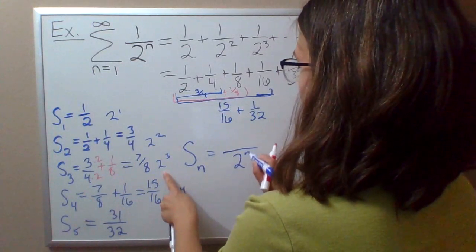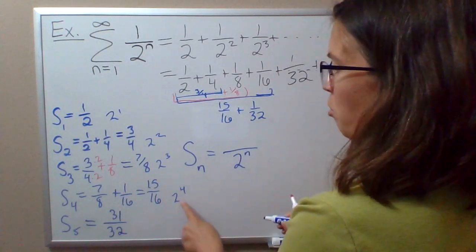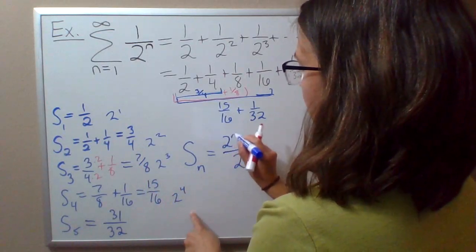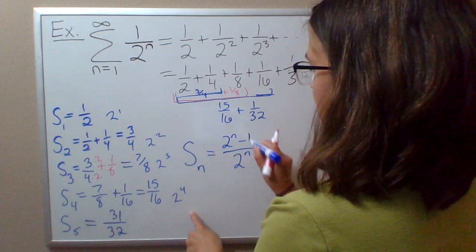And the numerator is always one less. So it's whatever the denominator is—I wrote it as 2 to the n minus 1.